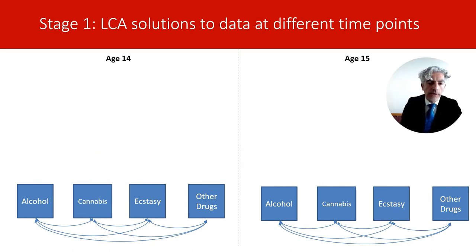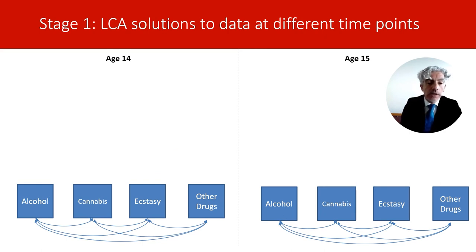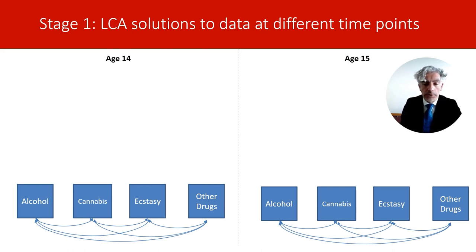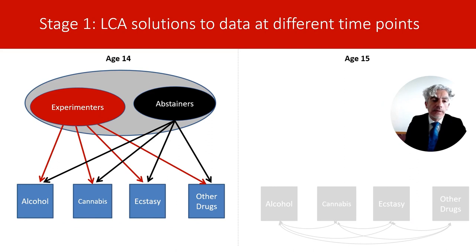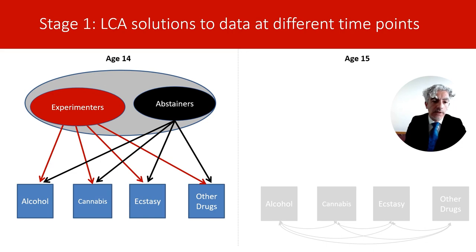The first stage of latent transition analysis is to find person-centered measurement models at each time point — that is, latent classes that can explain the variability of behavior patterns at each time point. For this reason, we start by looking for the best latent class models at each time point separately. To indicate this separation, I have added a gray line that divides the two time points. Latent class analysis allows us to select the number of latent classes and line subgroups that can explain the variability of behaviors observed in the sample.